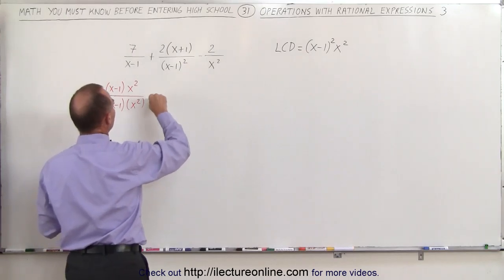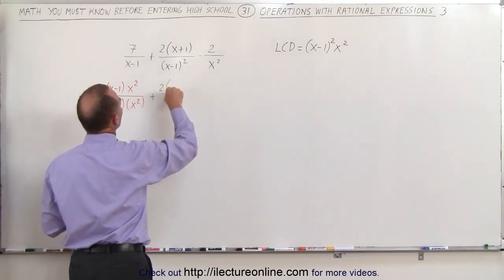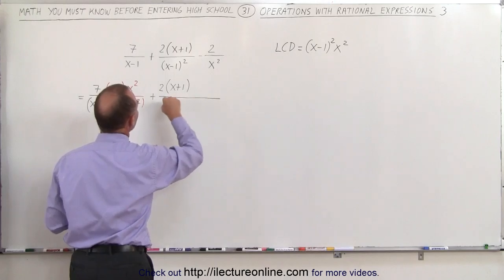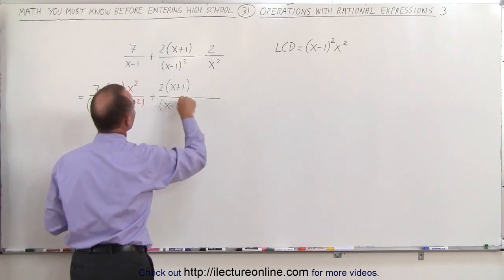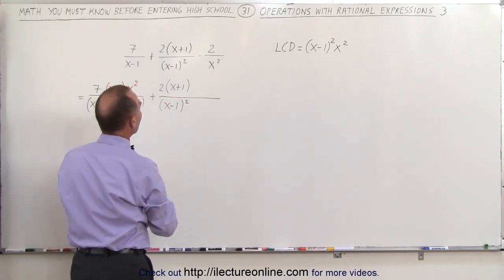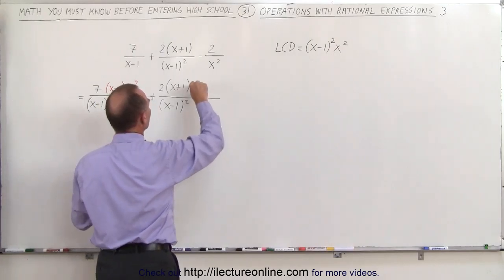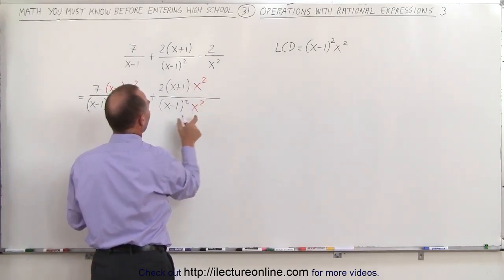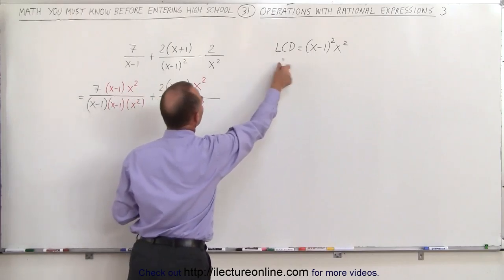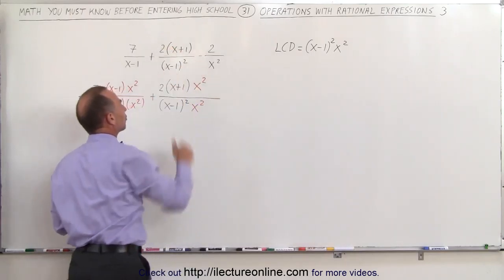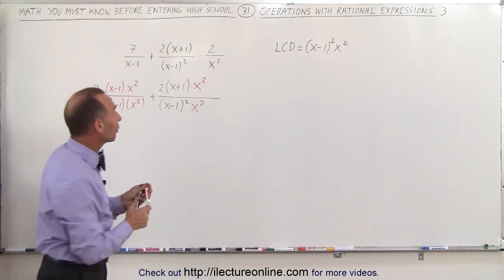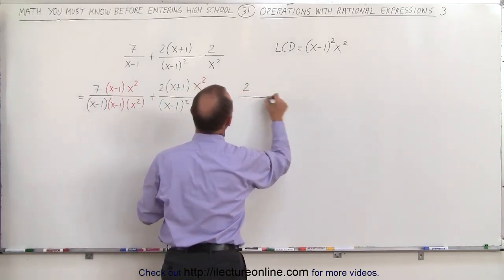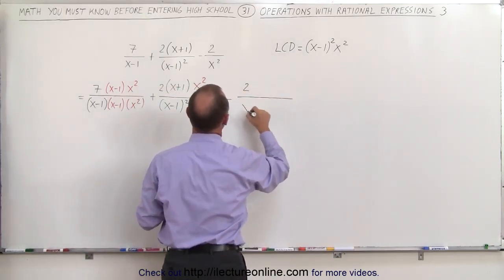Plus the quantity 2 times x plus 1 divided by x minus 1 squared. If I multiply both the top and the bottom by x squared, I have the lowest common denominator. And finally, the third fraction: minus 2 over x squared.